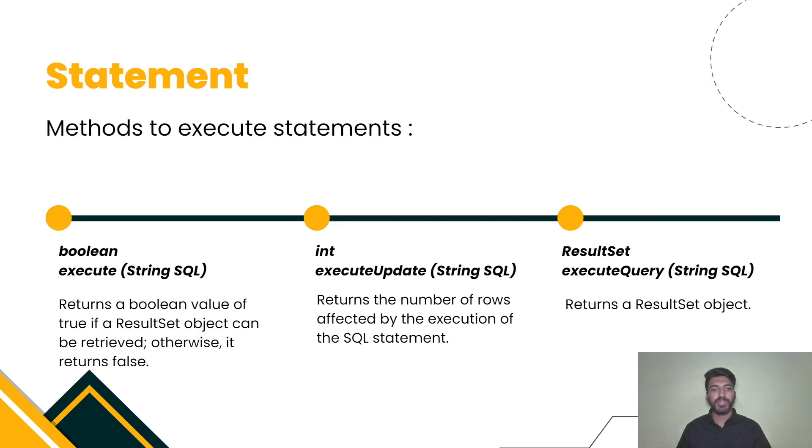First is boolean execute(String SQL). It returns a boolean value of true if a ResultSet object can be retrieved. Otherwise, it returns false. Another method is int executeUpdate(String SQL). It returns the number of rows affected by the execution of the SQL statement. And the last one is ResultSet executeQuery(String SQL). It returns a ResultSet object.